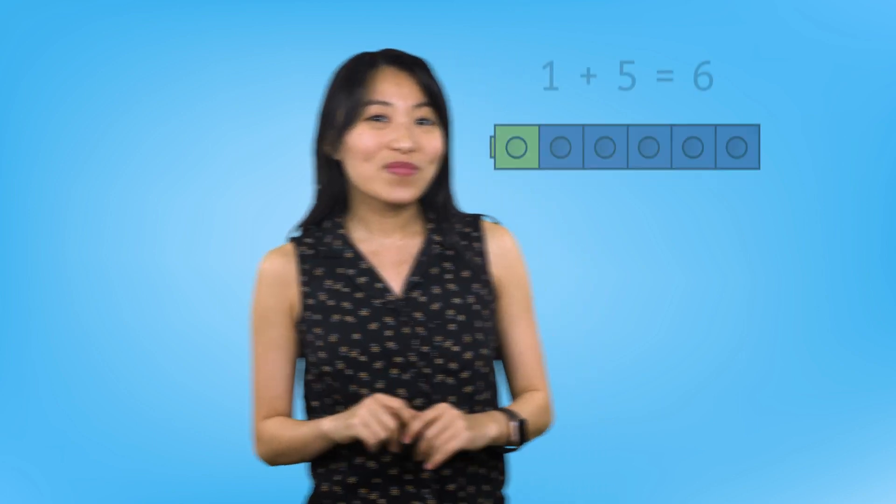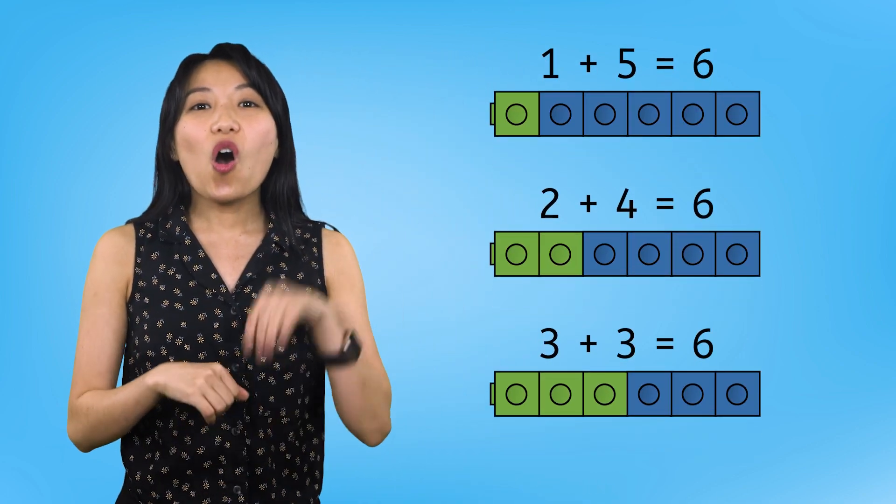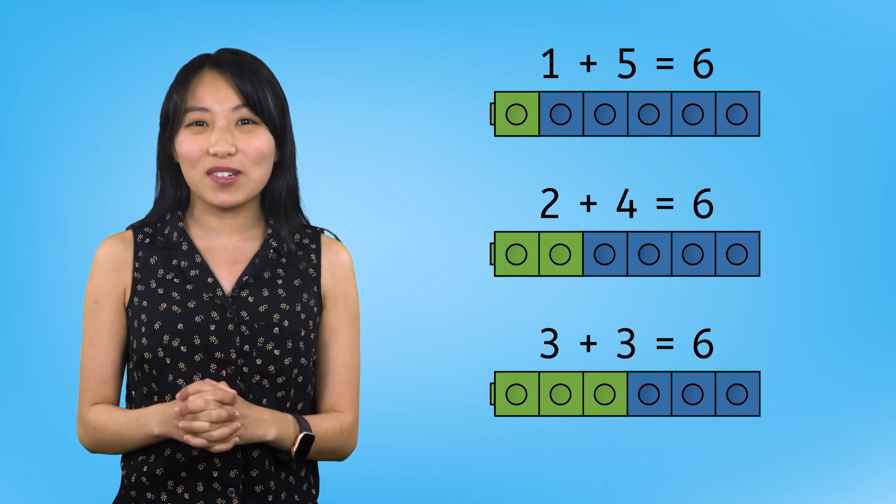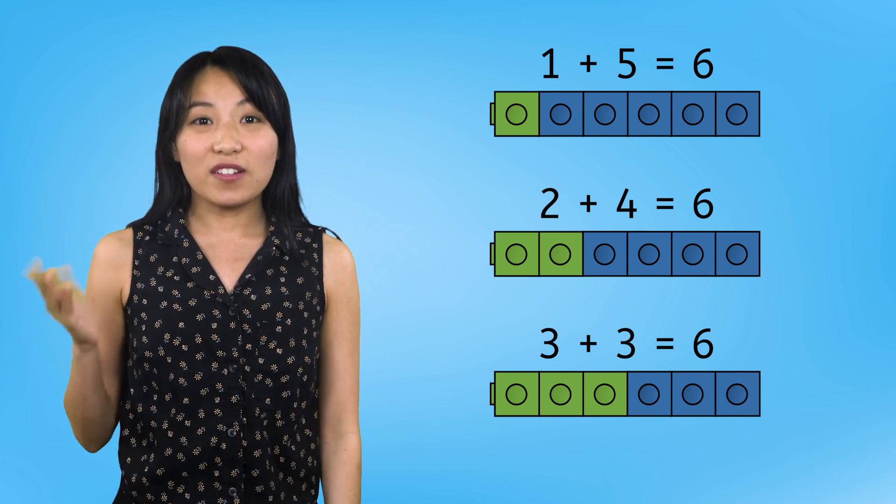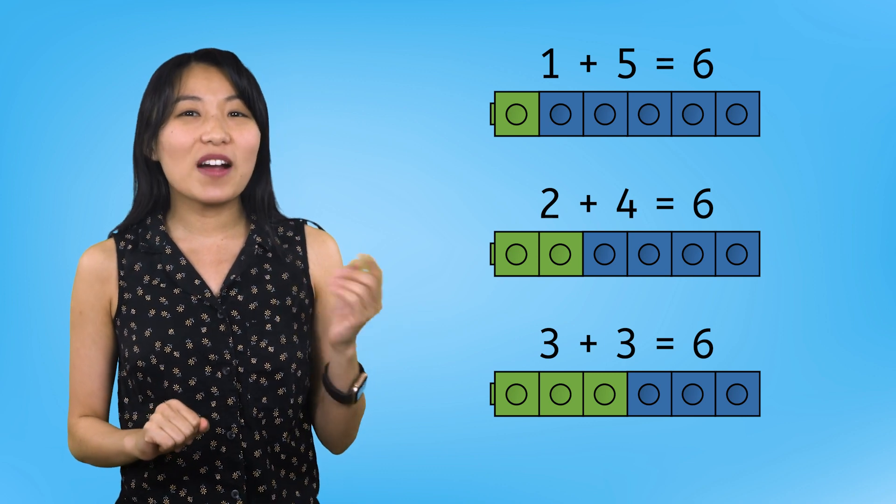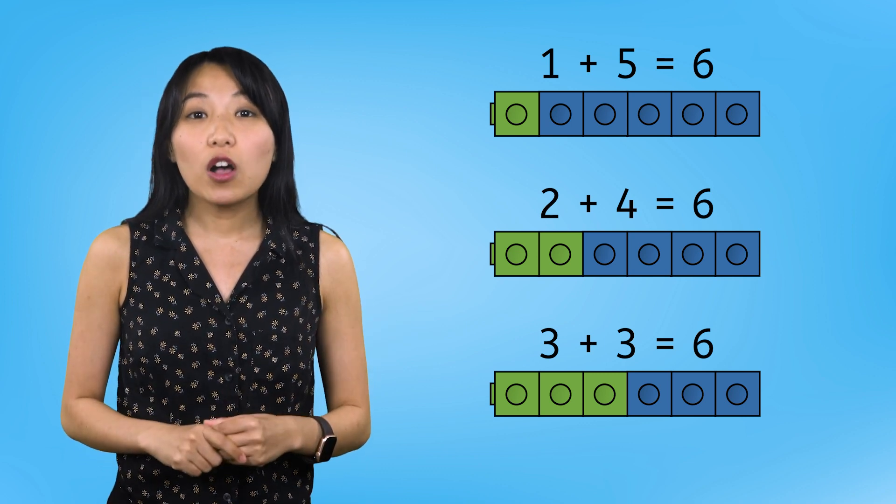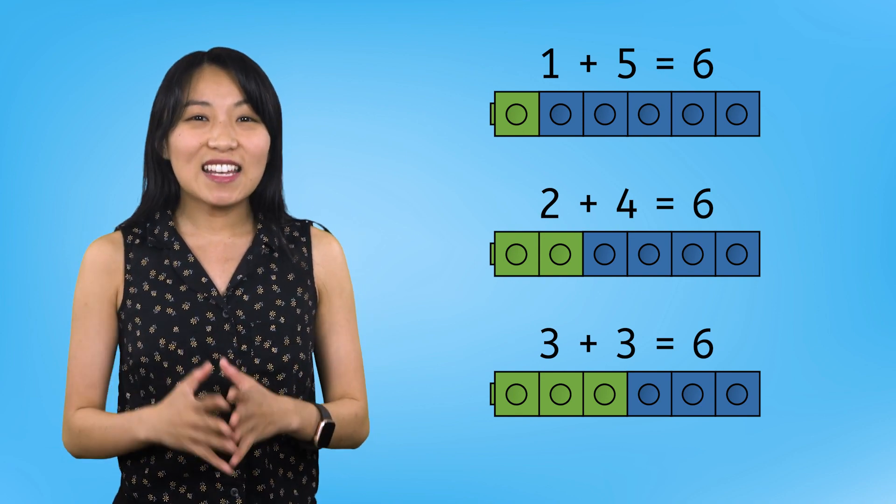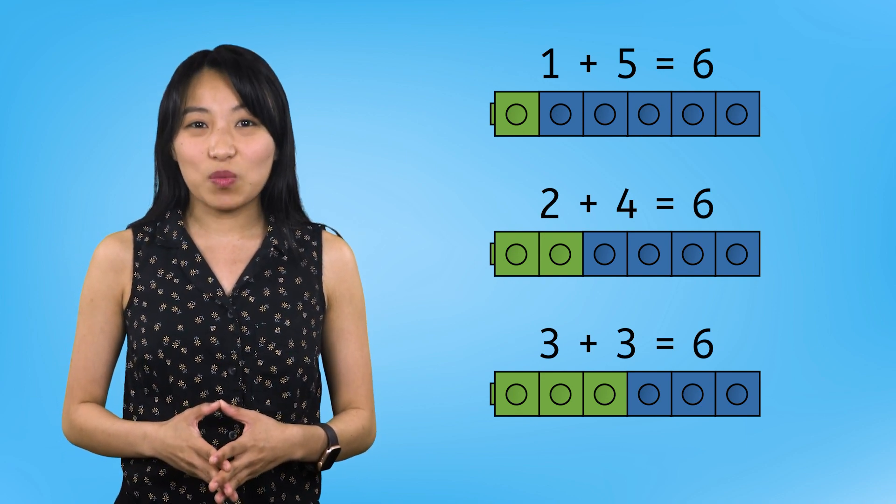Now we're going to do something silly and decompose or break the numbers we just made. I'll show you how. Here you can see all 3 ways we composed the number 6. One part is in blue, and the other part is in green. We also have the number sentences we wrote right above. Let's take a closer look at the first one.